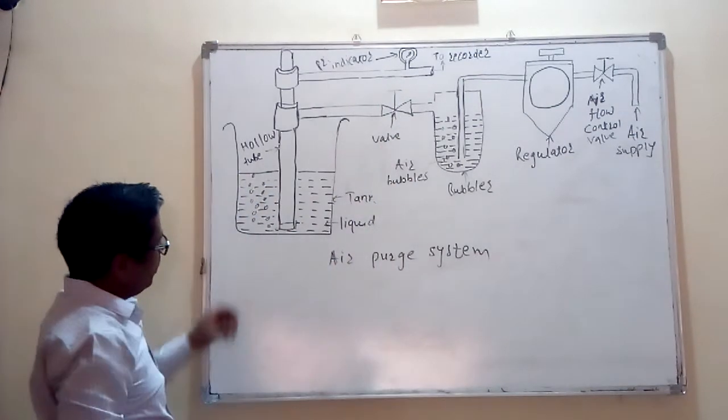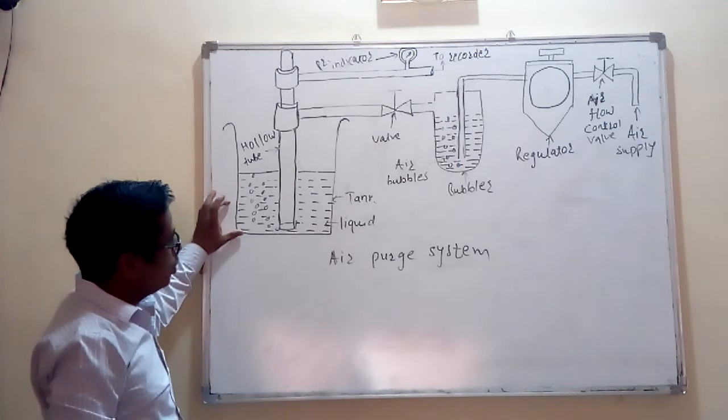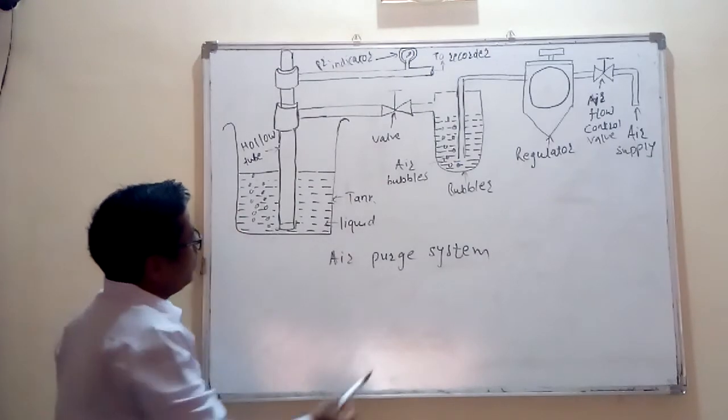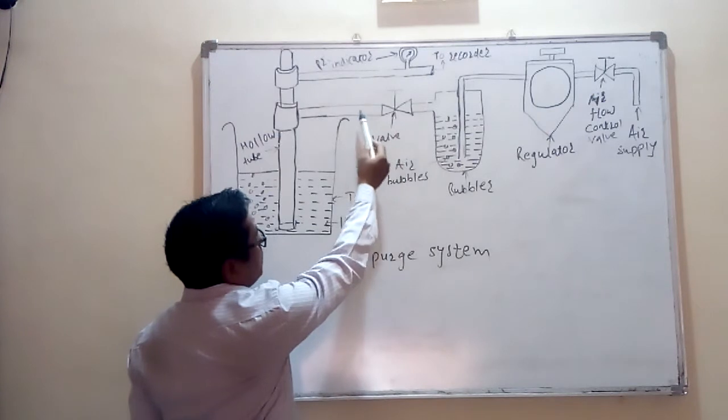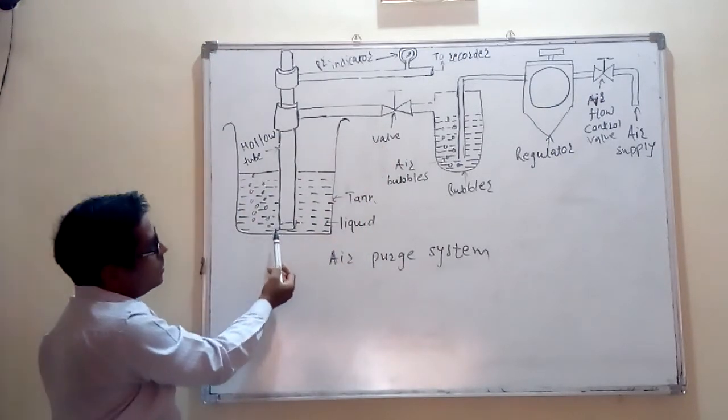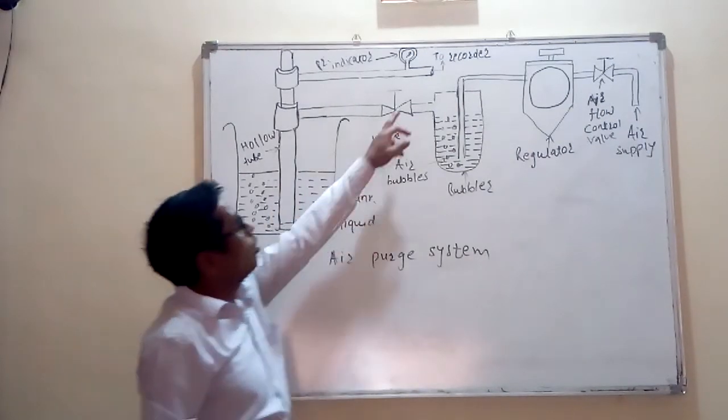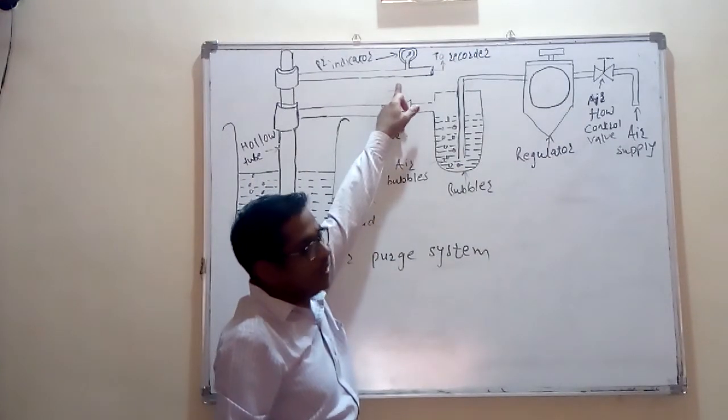Now, how this works? Whenever there is very less liquid in the system or there is no back pressure, then whatever air is coming through this valve, it is passing here. There is no resistance to the air. Hence, there won't be any back pressure or there won't be any pressure indicator reading.